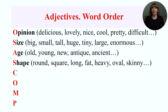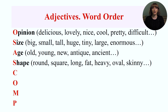Shape adjectives — also covering weight and length — tell us about the shape of something or how long or short it is, and can also refer to weight. Examples: round, square, long, fat, heavy, oval, skinny, stripe.